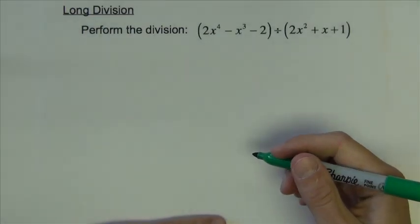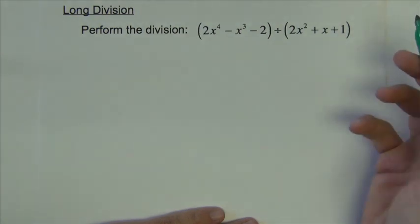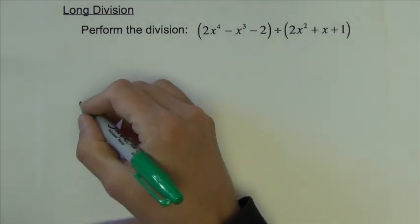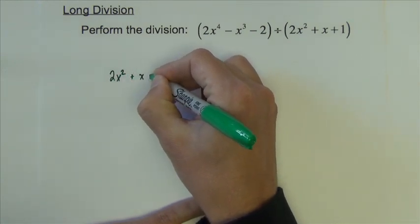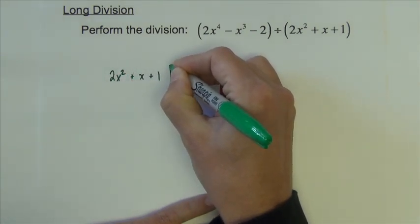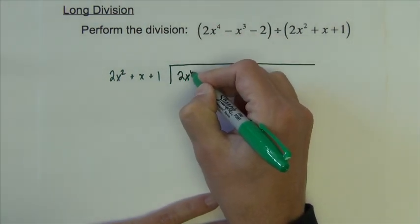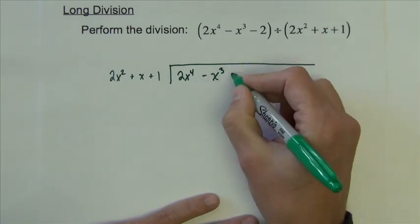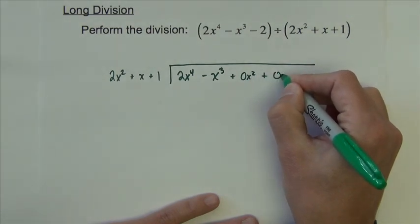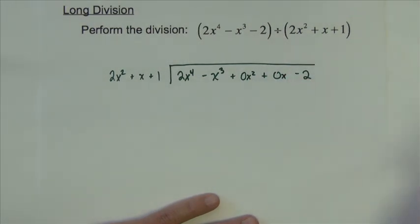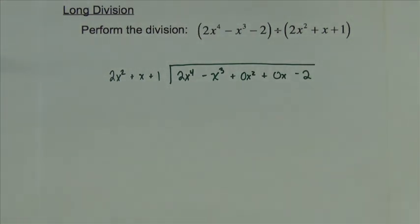The directions here say perform the division: 2x to the fourth minus x to the third minus 2 divided by 2x squared plus x plus 1. The divisor 2x squared plus x plus 1 goes on the outside. And the dividend 2x to the fourth minus x to the third. And here we're going to add some extra terms. Plus 0x squared plus 0x minus 2 goes underneath. So I'm just going to fill in all missing gaps, and that gets us ready to begin.